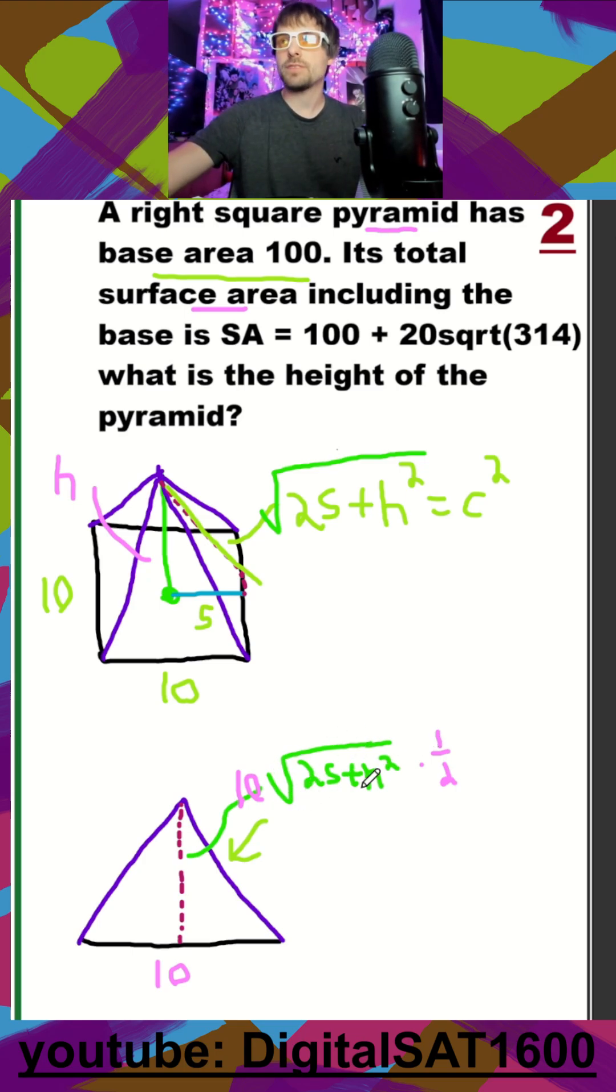So again, one half times 10, that's just going to get us 5. So our total area of one of our triangular faces is going to be 5√(25 + h²).